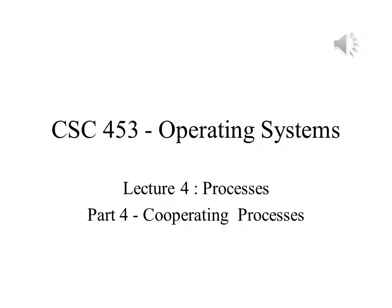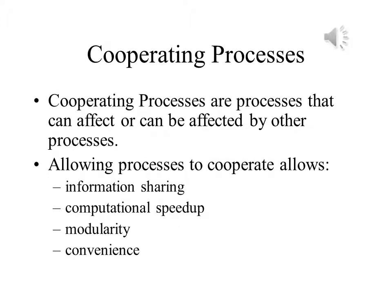In Part 4 of Lecture 4, we will discuss cooperating processes. On any computer system that runs more than one program at a time, it is possible that two or more of the processes will work together. One example of this is a word processor and a print spooler, where the word processor will prepare the text that will be printed, and the spooler will schedule the printing of various documents on the system's printers.